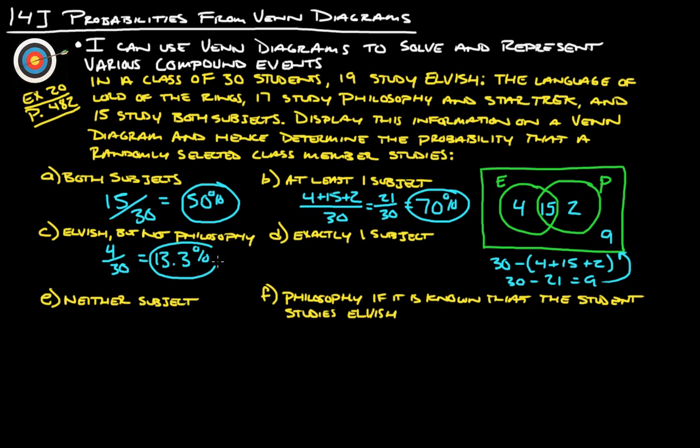Unless they state otherwise, it's usually best to go out to the nearest tenth on percents when you're finding probabilities. Exactly one subject is going to be these four people who study just Elvish and then these two people who study just philosophy and Star Trek, so that's going to be six out of thirty. Six divided by 30 gives us 20 percent.